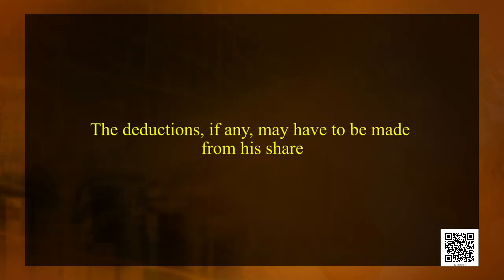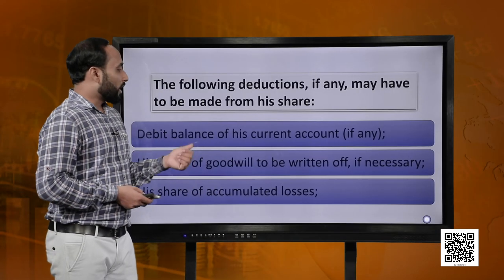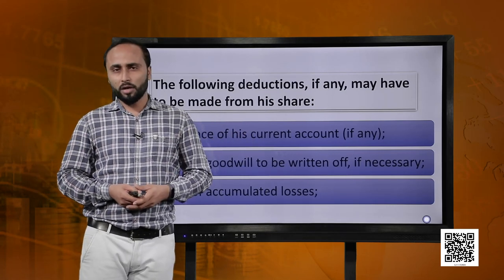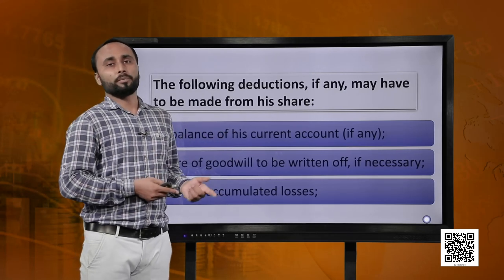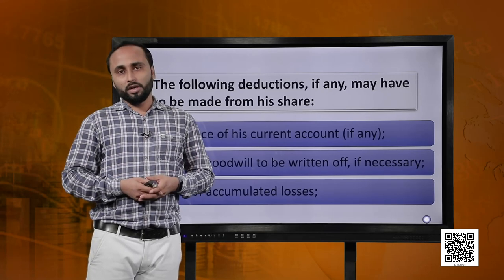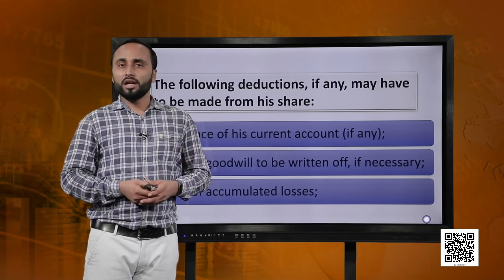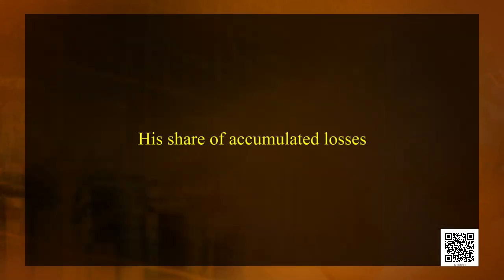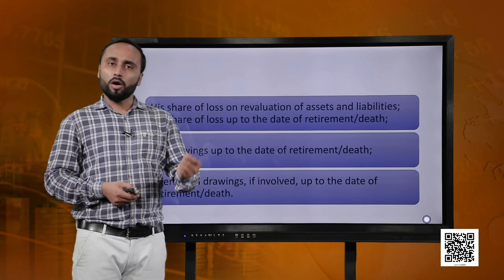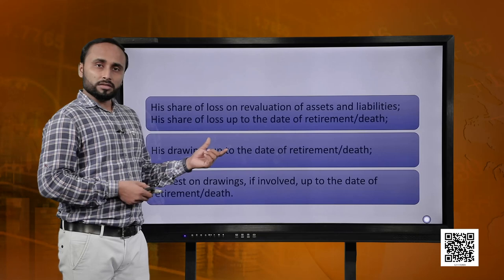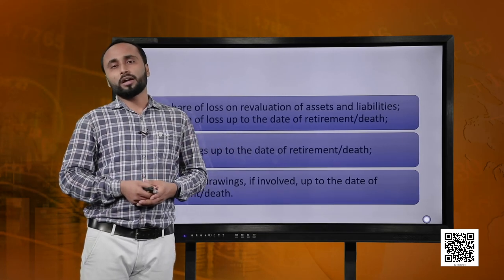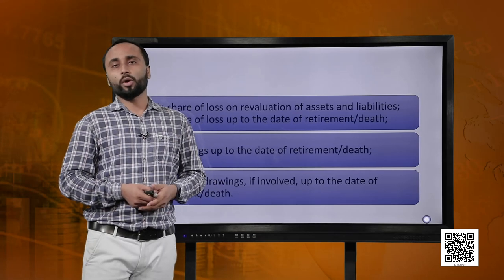Apart from these entitlements, the retiring partner's account is debited or deducted by certain amounts. First, if there is a debit balance in his current or capital account. Second, if there is existing goodwill, it has to be written off and the partner's account is debited. Third, accumulated losses are debited in his share. Fourth, loss on revaluation of assets and liabilities is debited. Finally, drawings and interest on drawings are also debited.